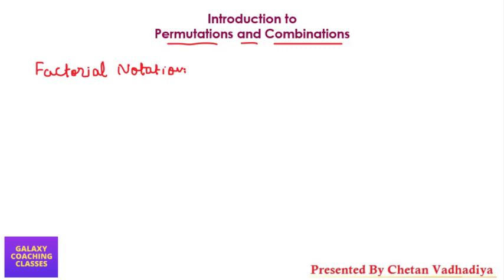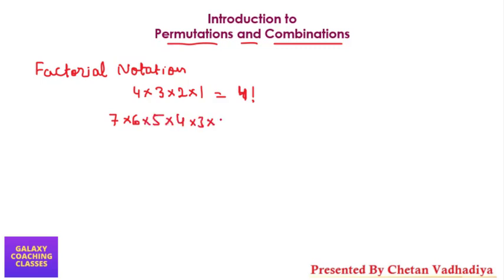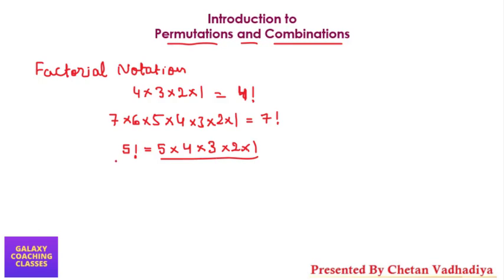Factorial notation is a shortcut that will help you to count the numbers. If you want to multiply 4 into 3 into 2 into 1, you can write this as 4 factorial. So 4 factorial is 4 into 3 into 2 into 1. Similarly, 7 into 6 into 5 into 4 into 3 into 2 into 1 can be written as 7 factorial. And 5 factorial means 5 into 4 into 3 into 2 into 1. This is a shortcut to represent this type of number.